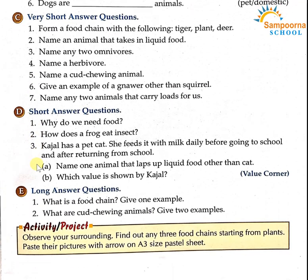Now, exercise D: short answer questions. Number 1: why do we need food? Hamain food ki zarurat kyun hoti hai? Number 2: how does a frog eat insect? Frog insect kaise khata hai? Woh apni sticky tongue — lumbi si sticky tongue — ko apne prey ke paas throw karta hai, aur us ko jaldi se khata hai. Number 3: Kajal has a pet cat. Kajal ke ek pet cat hai. She feeds it with milk before going to school and after returning from school. Name one animal that laps up liquid food other than cat — dog.